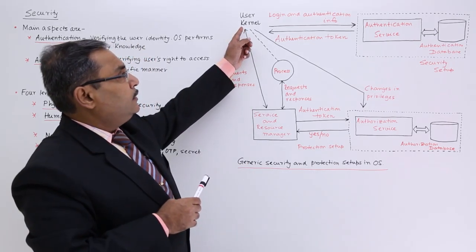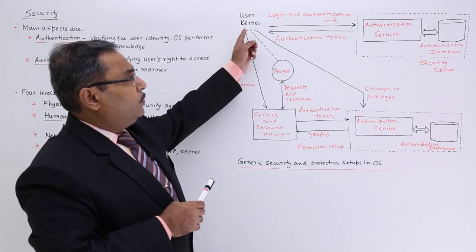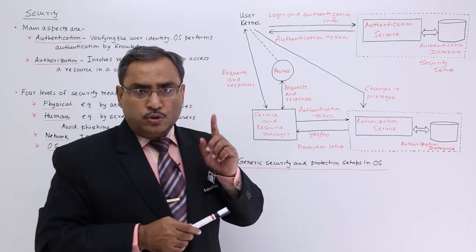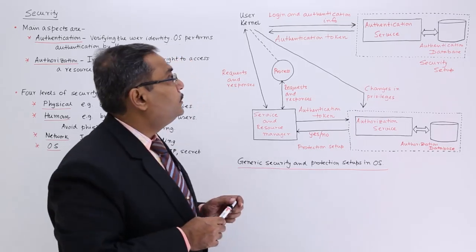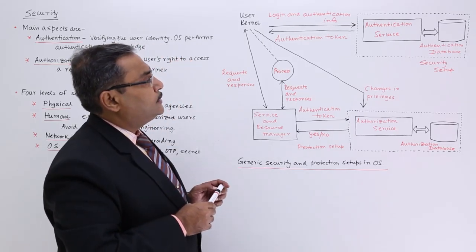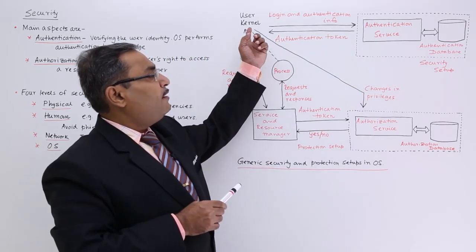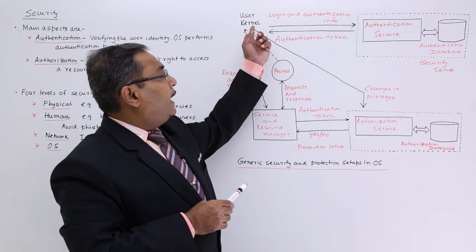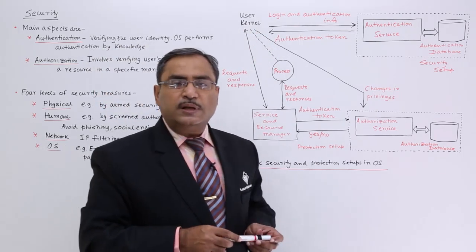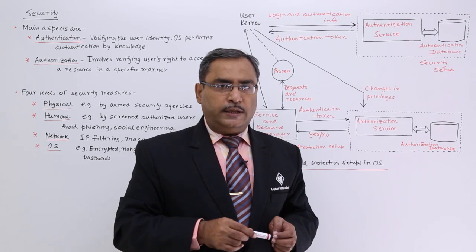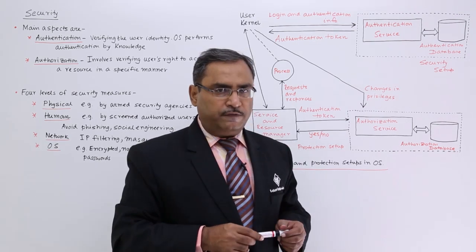So this user kernel will take the support of this authentication system to authenticate one user. So login and authentication info will be passed and then authentication token will be made available to the kernel. And this user kernel can also do some changes in the privileges or in the authorization parameters of a certain users.